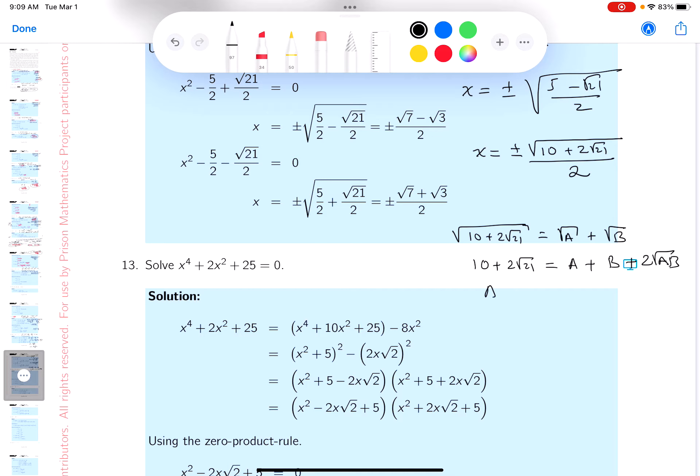You get 10 and you get 2 root 21 equals a plus b plus 2 root ab. Well, a plus b is 10. Fairly simple to do. And a times b would be 21. I'm kind of looking at that. I'm not going to say it's easy, but it's not bad. I'm going to say 3 and 7.